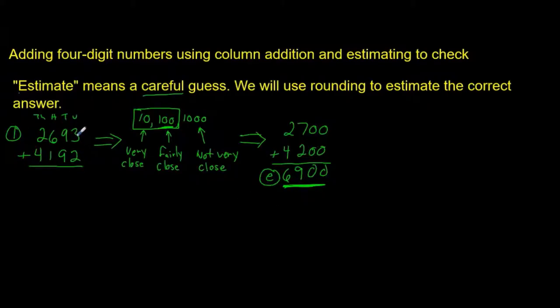So, 3 plus 2 is 5. 90 plus 90 is 180. Carry the 100 over to the hundreds column. 600 plus 100 is 700 plus another 100 is 800. And 2,000 plus 4,000 is 6,000.